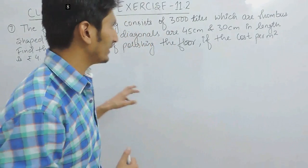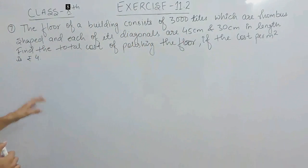Hello everyone, in this video we are going to solve question number 7 of exercise 11.2. The question says, the floor of a building consists of 3000 tiles which are rhombus shaped and each of its diagonals are 45 cm and 30 cm in length. You have to find the total cost of polishing the floor if the cost per meter square is Rs. 4.